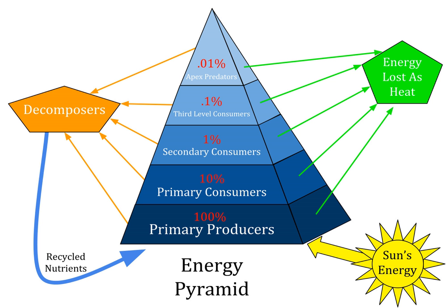Ecological pyramids may be upright, e.g. grassland ecosystem; inverted, e.g. parasitic ecosystem; or dumbbell-shaped, e.g. forest ecosystem. Energy pyramids begin with producers on the bottom and proceed through the various trophic levels, such as herbivores that eat plants, then carnivores that eat flesh, then omnivores that eat both plants and flesh, and so on. The highest level is the top of the food chain.